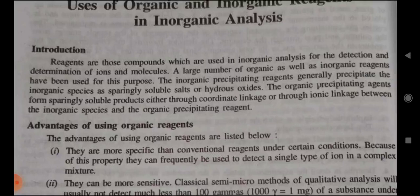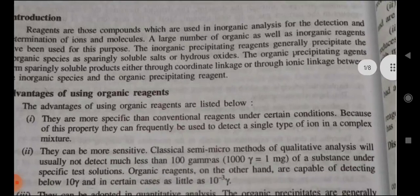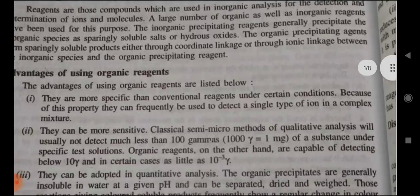Advantages of using organic reagents: First, they are more specific than conventional reagents under certain conditions. Because of this property, they can frequently be used to detect a single type of ion even in a complex mixture. They can be more sensitive — classical semi-micro methods of quantitative analysis usually cannot detect much less than 100 gamma of a substance, whereas organic reagents are capable of detecting below 10 gamma, and in certain cases as little as 10 to the power minus 3 gamma.